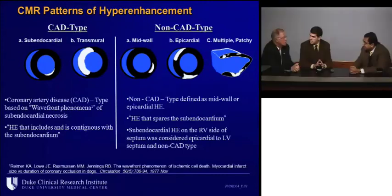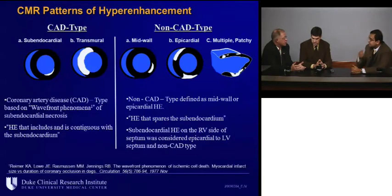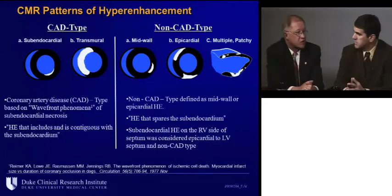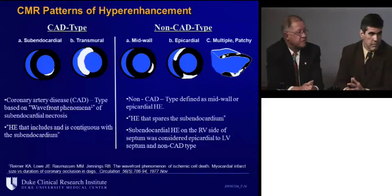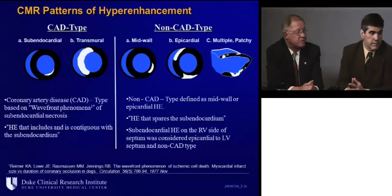Peter uses MRI mostly for viability — it's an excellent tool there and provides dynamic images of the heart that can confirm echo findings or let you see structures in a different way. It's a relatively commonly performed test in low-EF patients. In the very low-EF patient — like the 73-year-old gentleman with an EF of 15 — this is where a viability test of some sort, nuclear, PET, or MR, could be used.